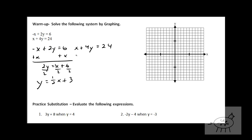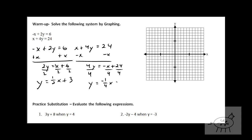Let's solve the other one. Subtract x. So four y equals negative x plus 24. Divide by four. So y equals — that's a one there — so it's negative one fourth x plus six.